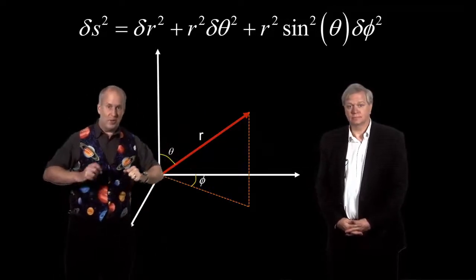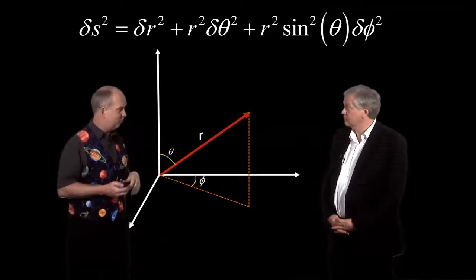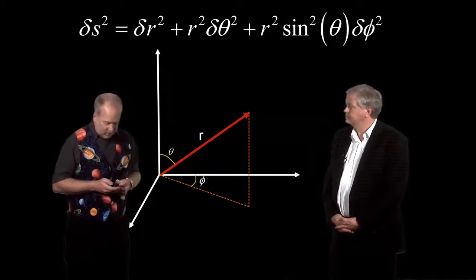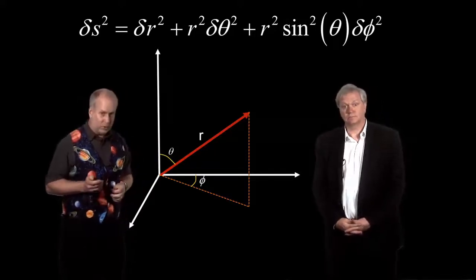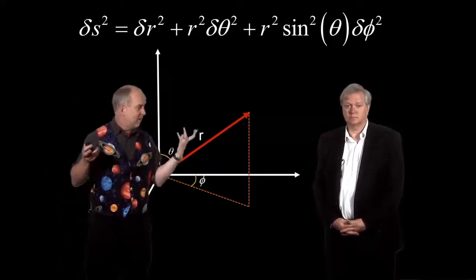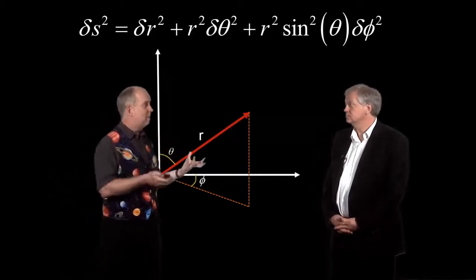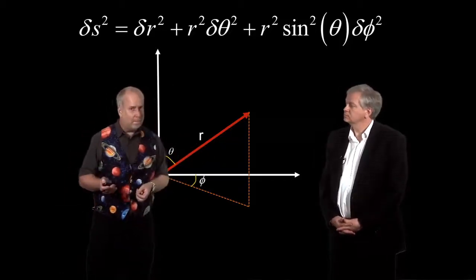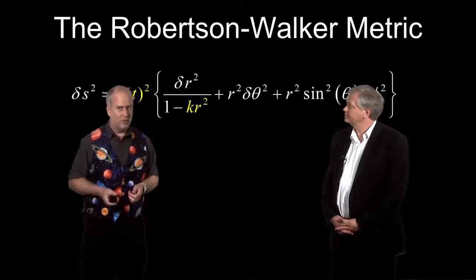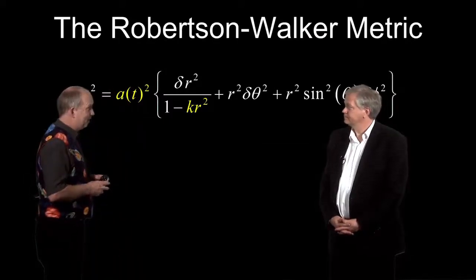So, that is the common sense metric for a flat universe. But the Robertson-Walker metric, which is the one that we get in the case of our own universe, if we assume it's the same everywhere, the so-called isotropy, is a bit different. Not very different, but just different enough to be painful, I guess.